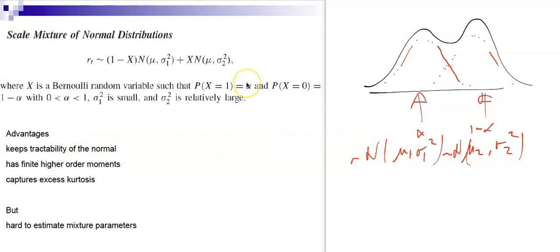Advantages of mixture of normals: no infinite variance, tractability since it's a combination of normals, and easy computation of high-order moments. The mixture can capture excess kurtosis better than a single normal distribution.